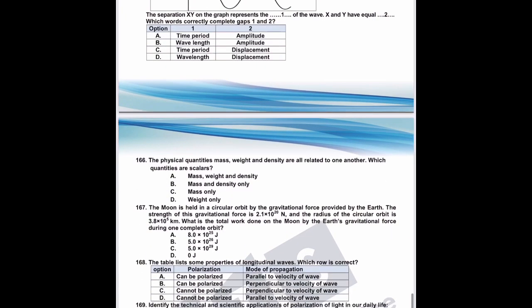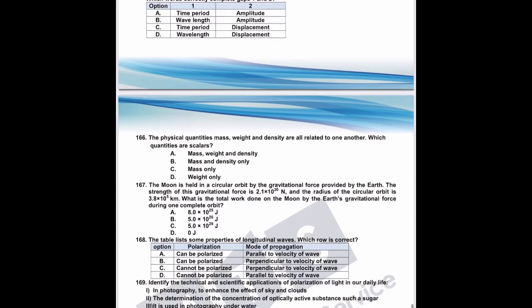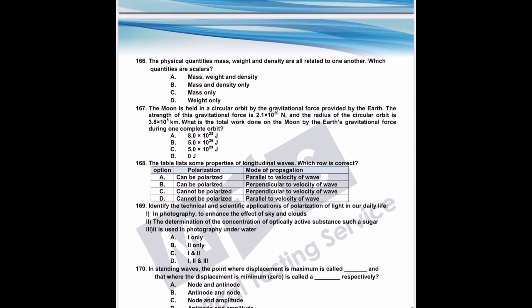Question 166: the physical quantities mass, weight, and density — which are scalars? Weight is a vector quantity because it is the force exerted by the earth on an object towards its center. So we exclude weight. Mass and density are both scalars. The correct answer for Q166 is B.